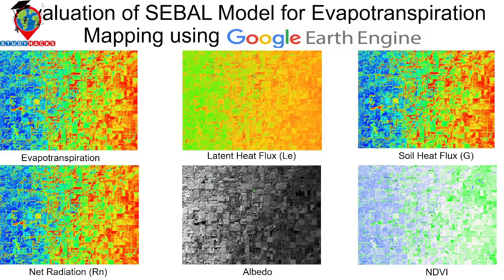Hello everyone, welcome to the SteadyHacks Institute of GIS and Remote Sensing. Today I will discuss the evaluation of the SEBAL model for evapotranspiration mapping using Google Earth Engine. SEBAL is a very important model for monitoring evapotranspiration, which is one of the major parameters in the hydrological cycle. SEBAL stands for Surface Energy Balance Algorithm for Land, and using it we can easily monitor evapotranspiration using Landsat or Sentinel imagery.